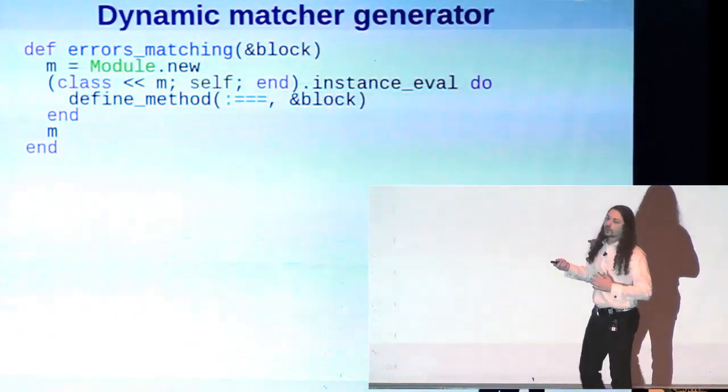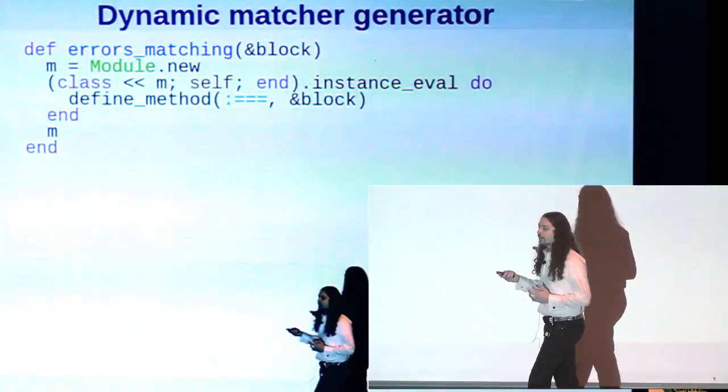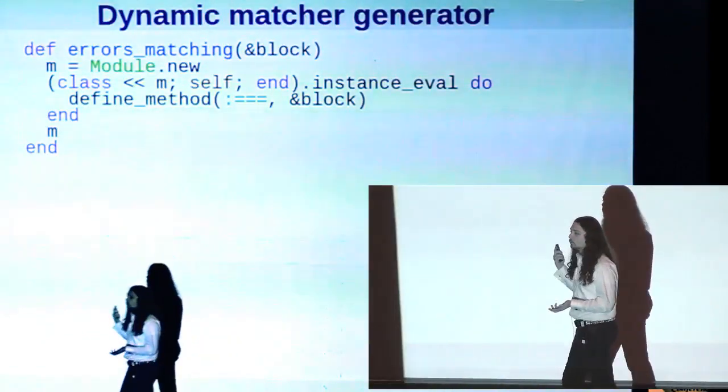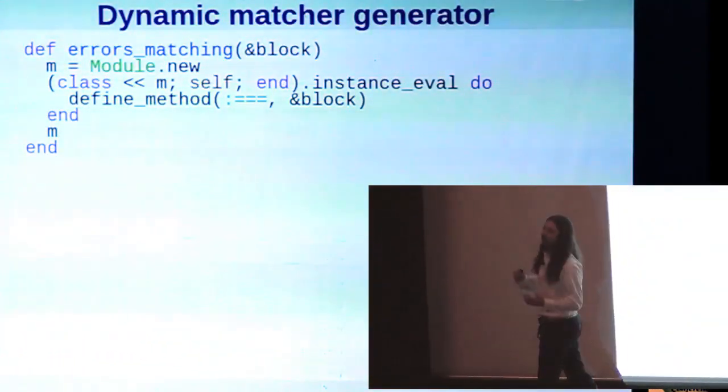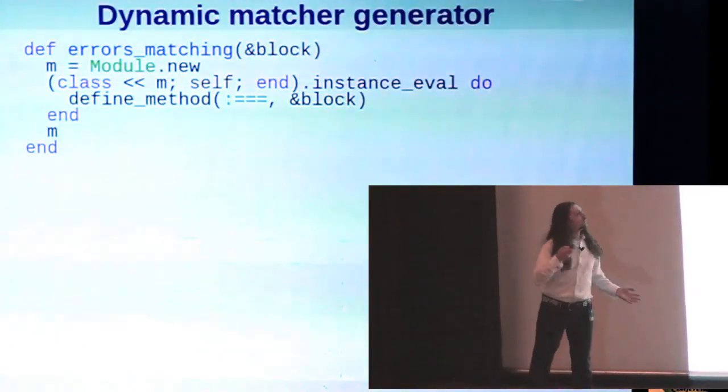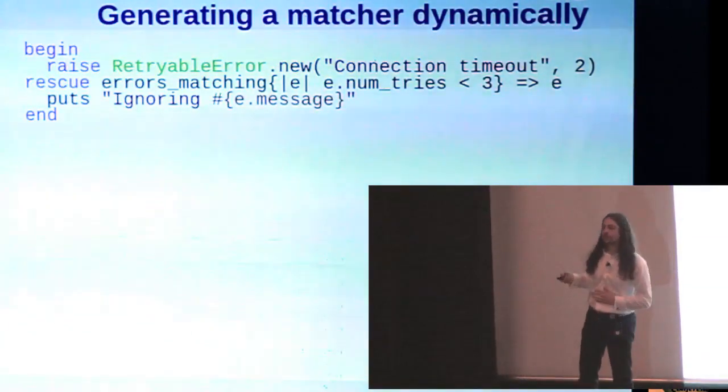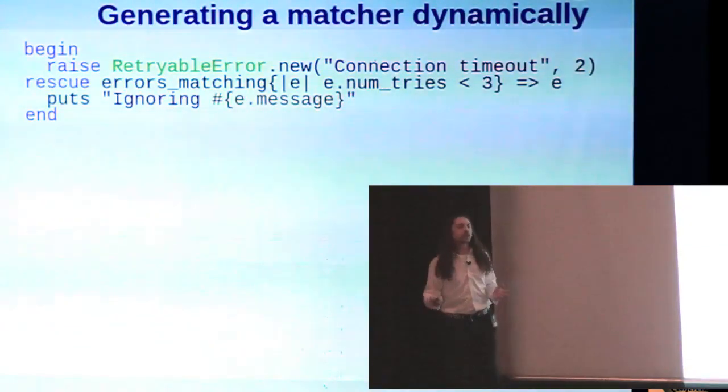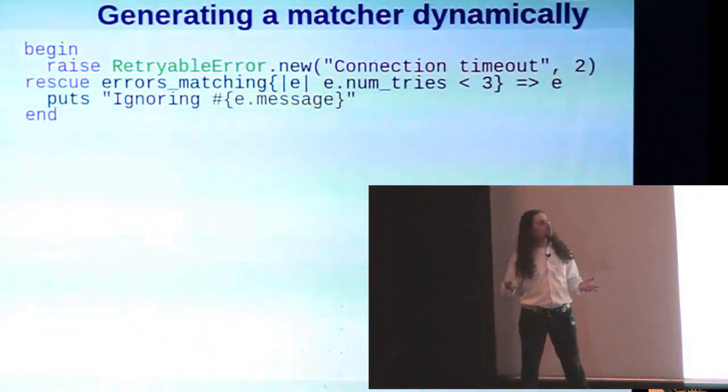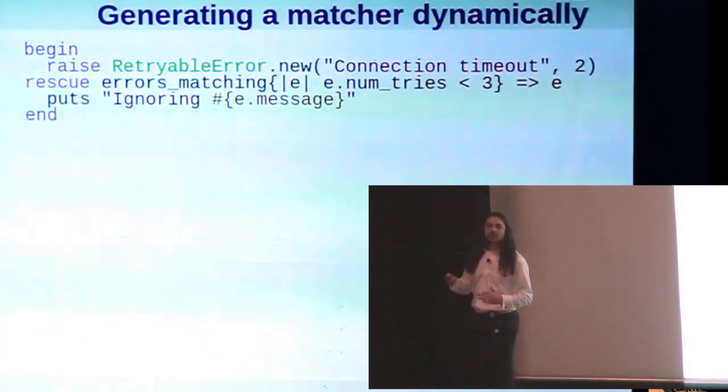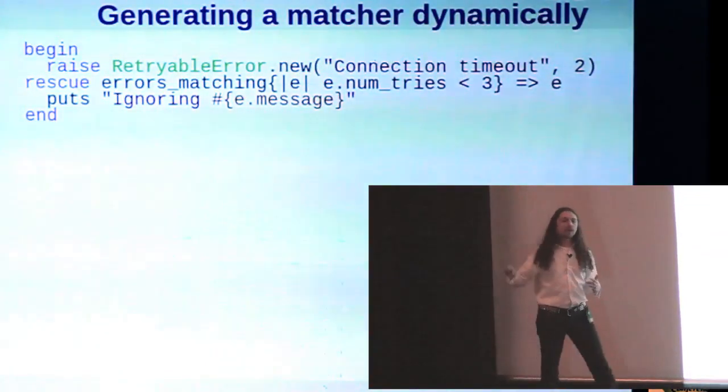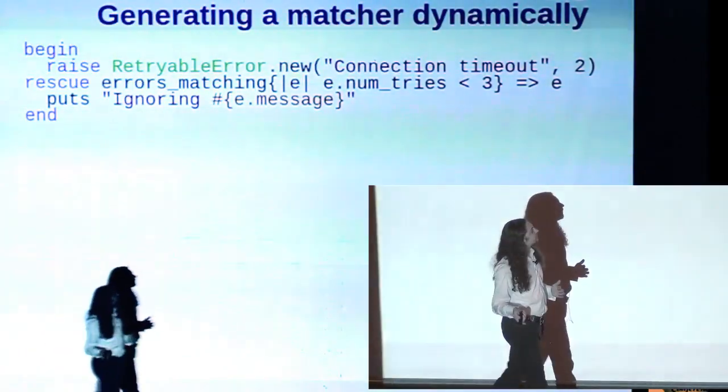So we could generate our own anonymous modules that define custom three equals operators. Here's one which just defines the three equals as doing whatever the block contains, which is probably about as clear as mud, but hopefully this will clarify what we're doing here. Let's say we have this notional retriable exception, or retriable error, which contains a count of the tries that this operation, times that this operation has been tried. We can use this error match, errors matching method that we defined in the last slide, to define a dynamic way of matching exceptions. So we say, match any exception where the number of tries attribute is less than three.